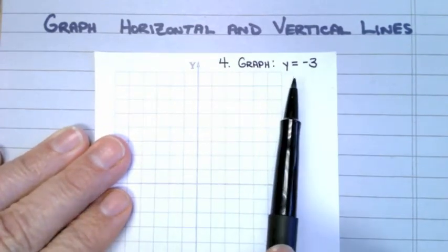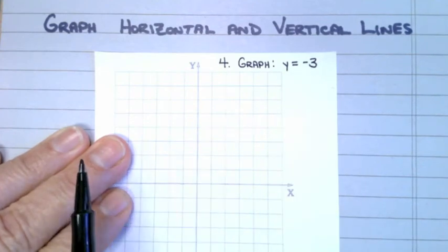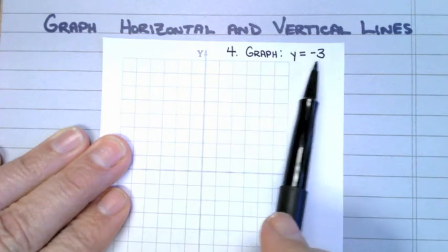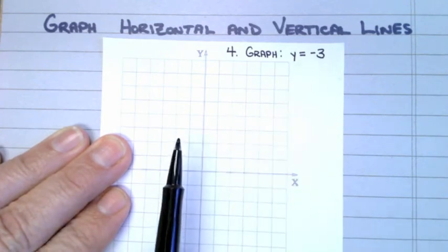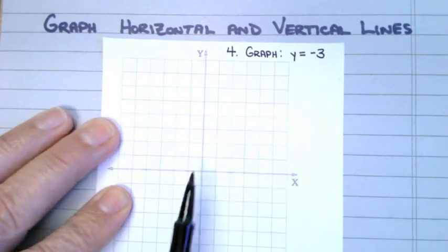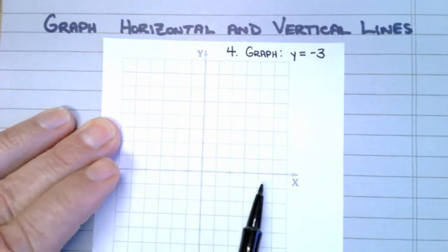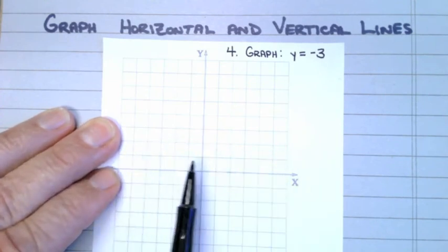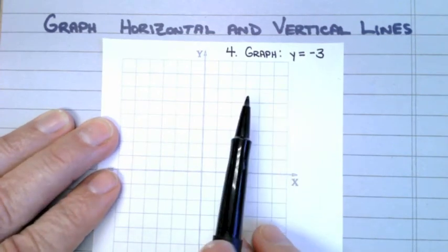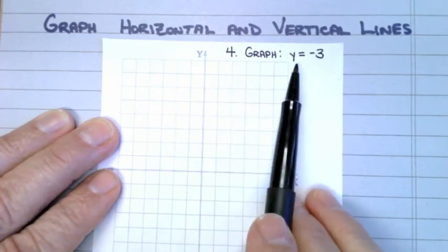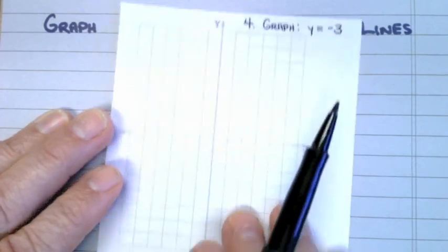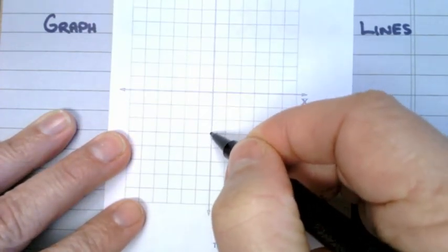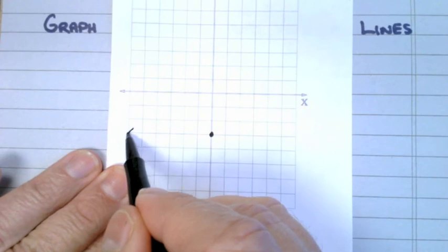Example number 4: I need to graph y is equal to negative 3. This equation does not have an x in it. Since it doesn't have an x in it, I need to draw a line that does not run into the x-axis — that will be a horizontal line. Where am I going to draw this horizontal line? At y is equal to negative 3. So I go down 1, 2, 3, and then I draw a horizontal line.